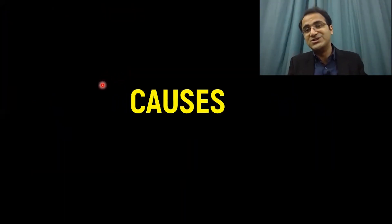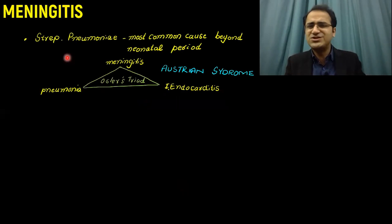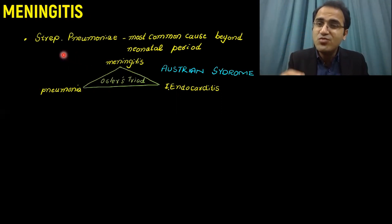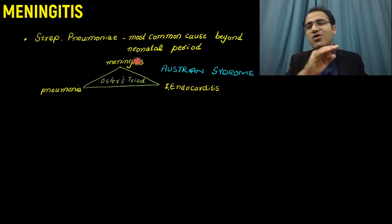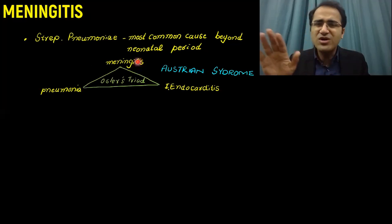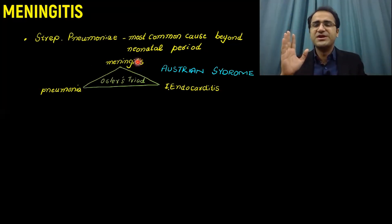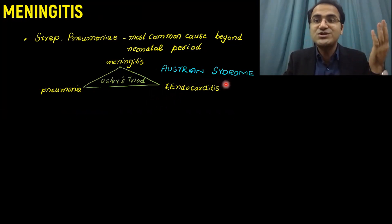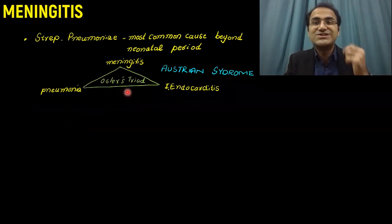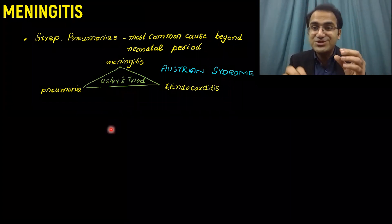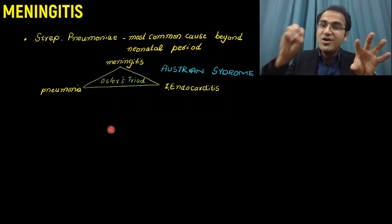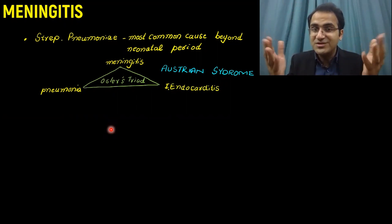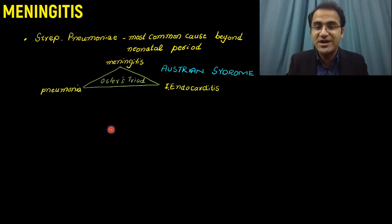Coming to the causes of meningitis, the most important organism to memorize is Streptococcus pneumoniae, which is the most common cause of meningitis in all ages above the neonatal period. An important associated condition is Austrian syndrome, or Osler's triad: meningitis, pneumonia, and endocarditis — all three caused by Streptococcus pneumoniae.